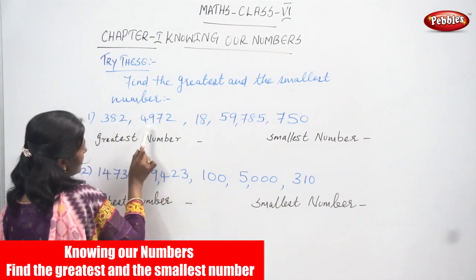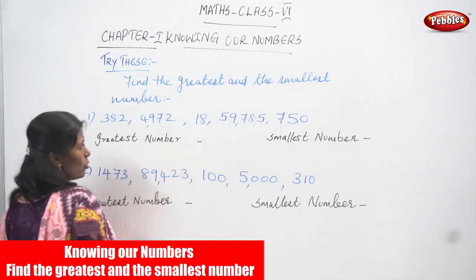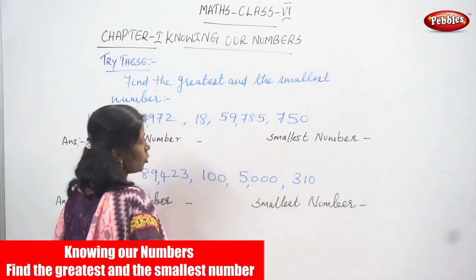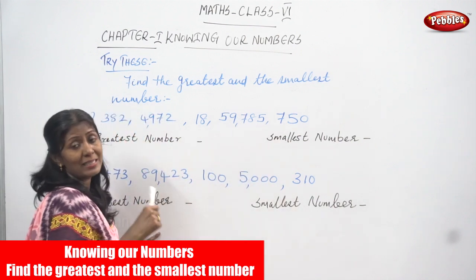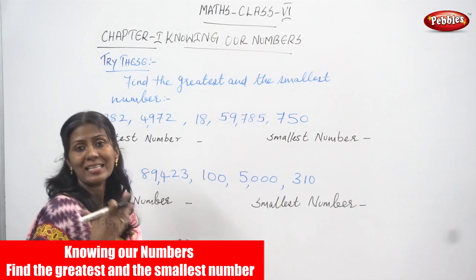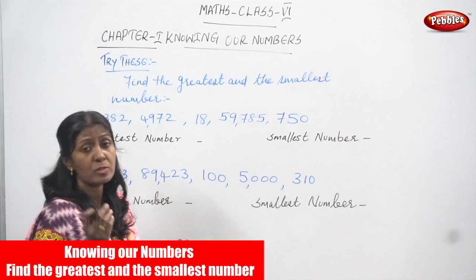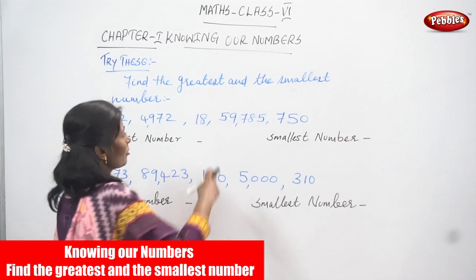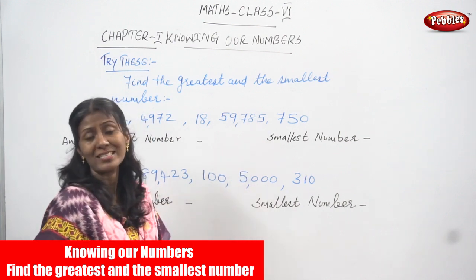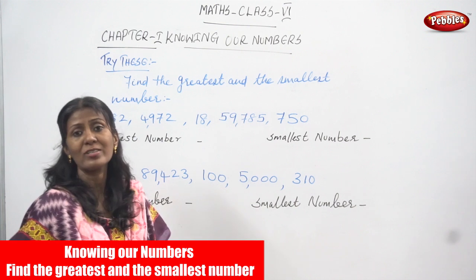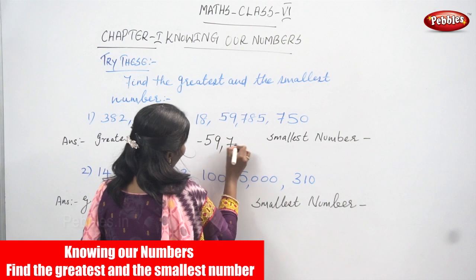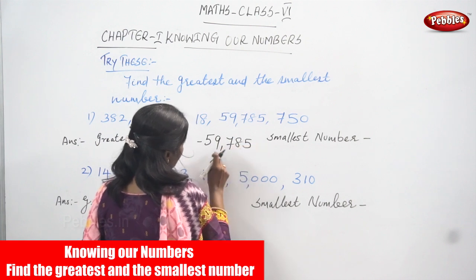This is 2 digits, this is 5 digits, and the last one is 3 digits. So, you have to write the greatest number of digits. The greater number of digits is very important because that is the greatest number. So, 59,785 is the greatest number because the number of digits is highest — 5 digits. Greatest number is 59,785. This is the right answer.